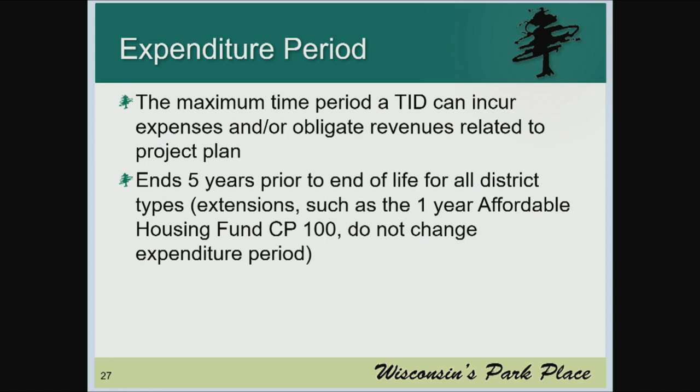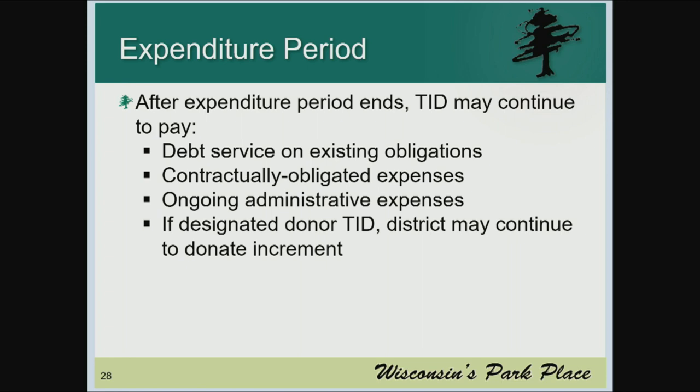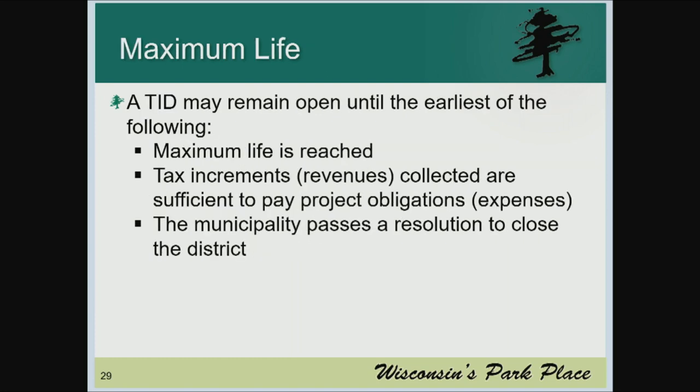The expenditure period is the maximum time period that a TID can be active, and it generally ends five years before the expiration of the district. An extension such as our Council Policy 100 for affordable housing does not extend the life of the TID itself. Beyond that expenditure period, within those last five years, TIDs can continue to cover their debt service, existing contractually obligated expenses, ongoing administrative costs, and if a donor TID, can continue to make those donations.